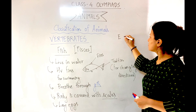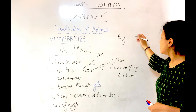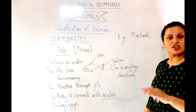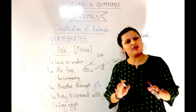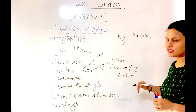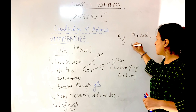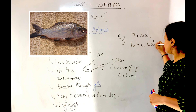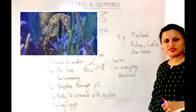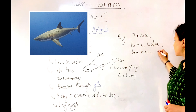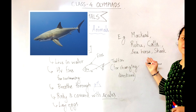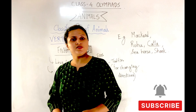Examples of fishes include mackerel, rohu, katla, seahorse, and shark. Note that prawns and crabs are invertebrates, not fish. Next, we move on to amphibians.